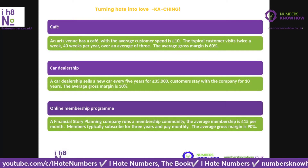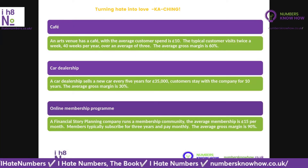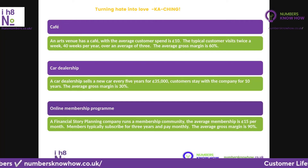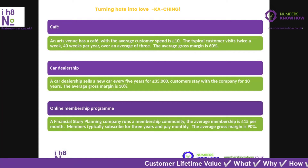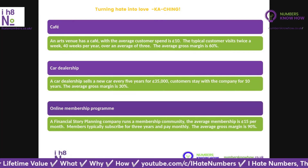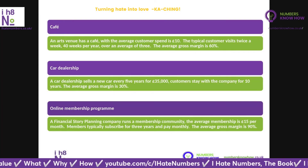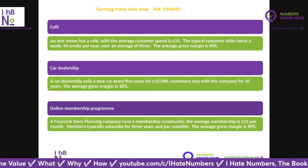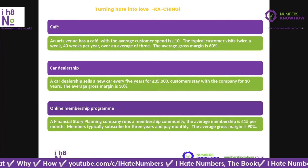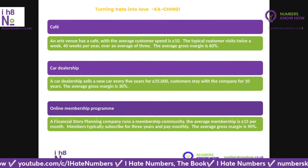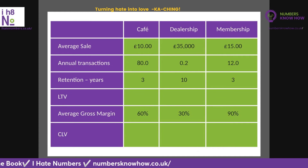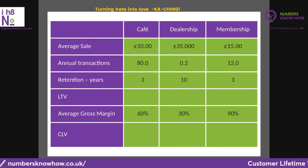The third example is a service-based organization — a financial planning company that runs a membership. The average membership fee is £15 per month, members typically subscribe for three years, and the average gross margin from each member is 90%. Next week's video will go into more detail on alternative ways to get a much more powerful insight into profitability, but this will do for our purposes now.